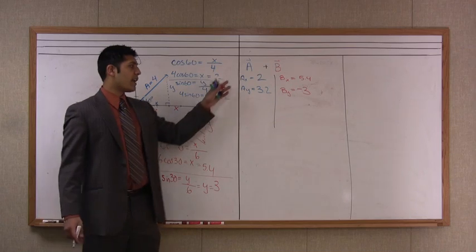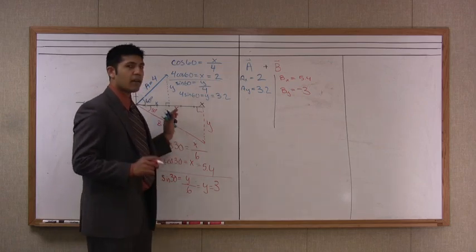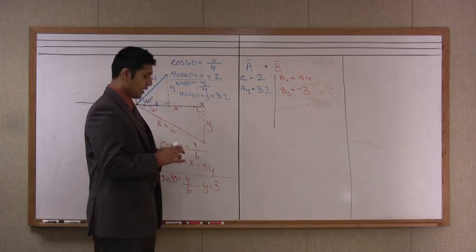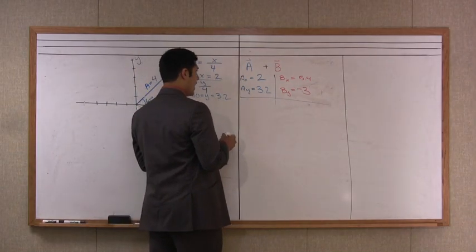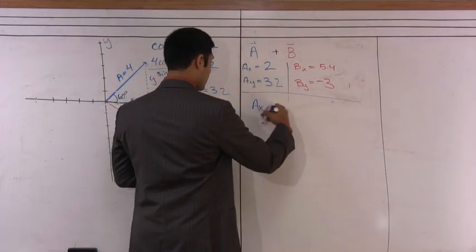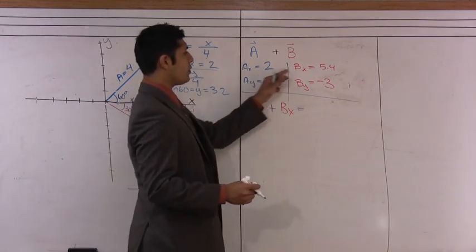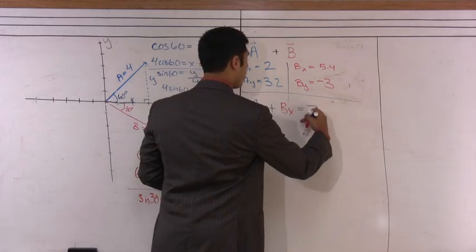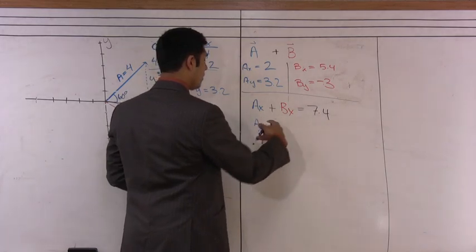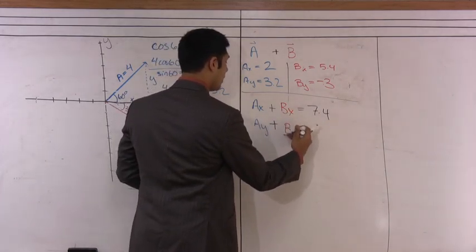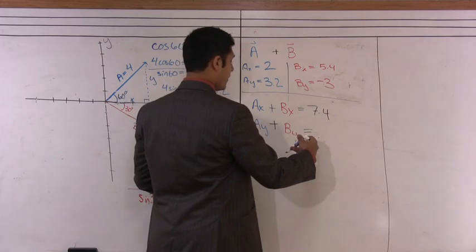And now we have classified what ax, ay, bx, and by are. I split my vector down into its appropriate components. Now to finish up and solve this problem, what I'm going to want to do is I'm going to want to take my ax plus my bx. And that is going to give me a value of 2 plus 5.4 or 7.4. And I'll also do the same thing for my y components. Ay plus by is equal to 3.2 minus 3, which is going to give me 0.2.